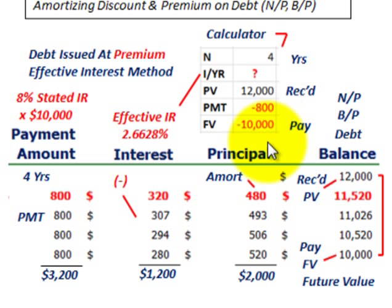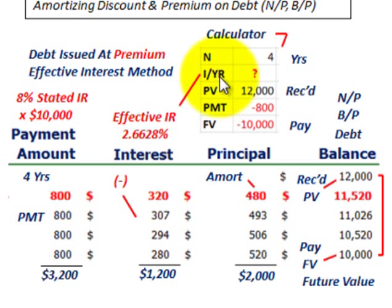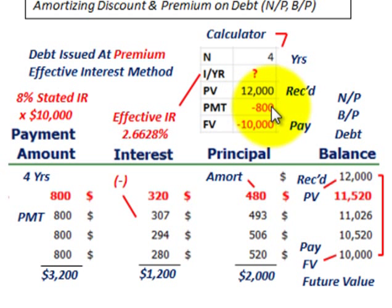Let's look at our calculator inputs. N equals 4 for the four-year term of this note. What we have to calculate is the effective interest rate per year. The present value is $12,000. The payment amount is $800. And the future value is $10,000.